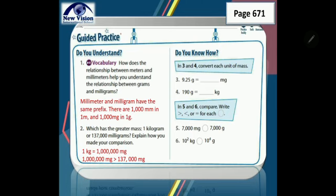In numbers 3 and 4, convert each unit of mass. Number 3: 9.25 grams to milligrams. Gram to milligram is big to small, so we multiply. 9.25 times 1,000 equals 9,250. So 9.25 grams equals 9,250 milligrams. Number 4: 190 grams equals blank kg. Gram to kg is small to big, so we divide. 190 divided by 1,000 equals 0.19 kg. So 190 grams equals 0.19 kilogram.